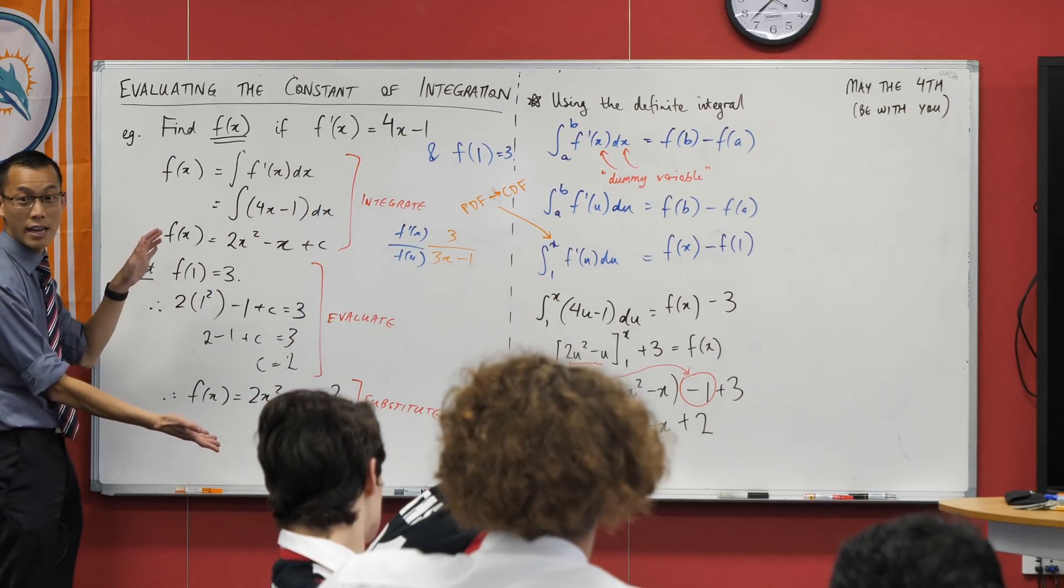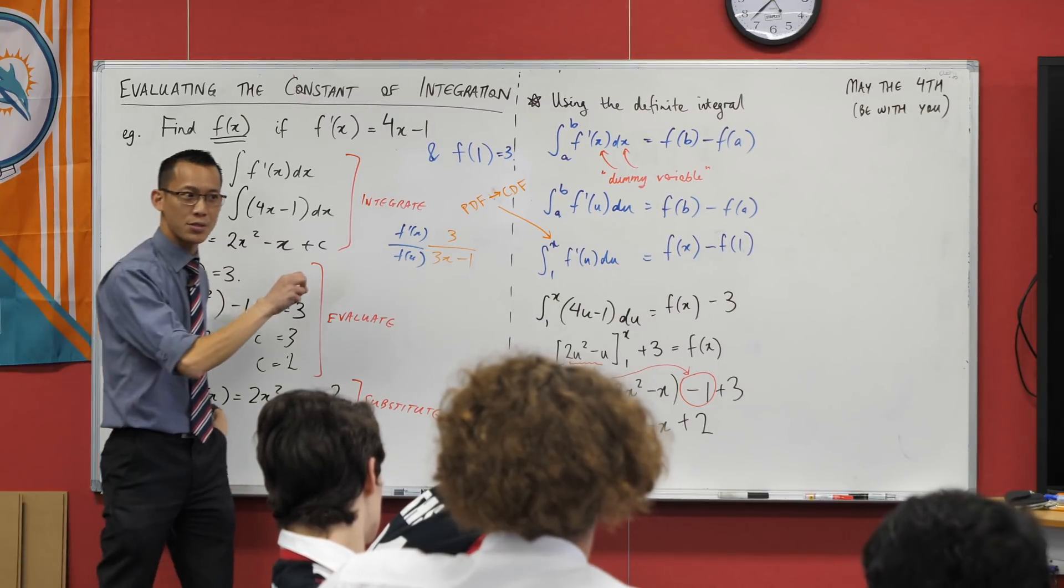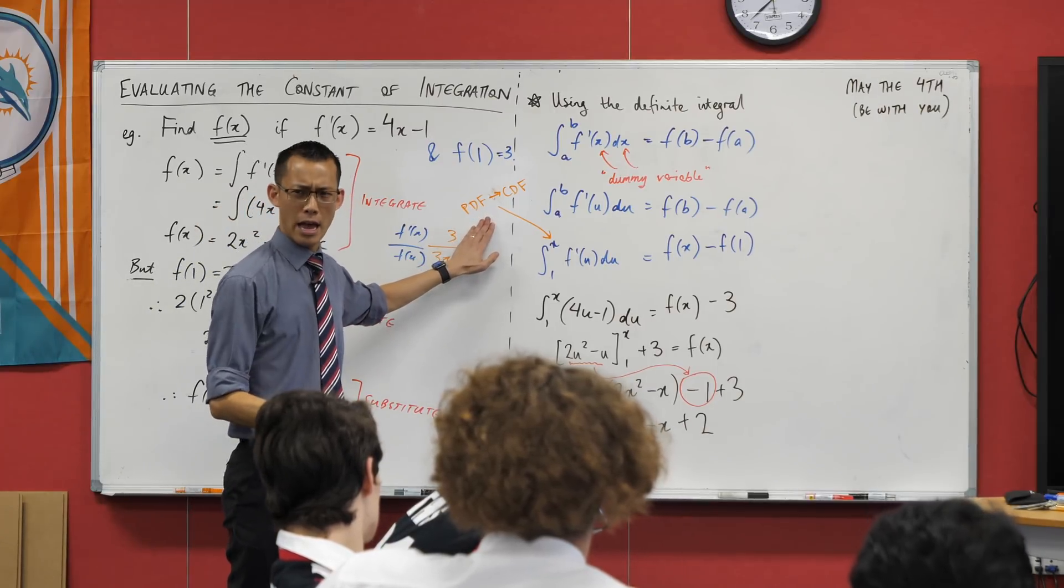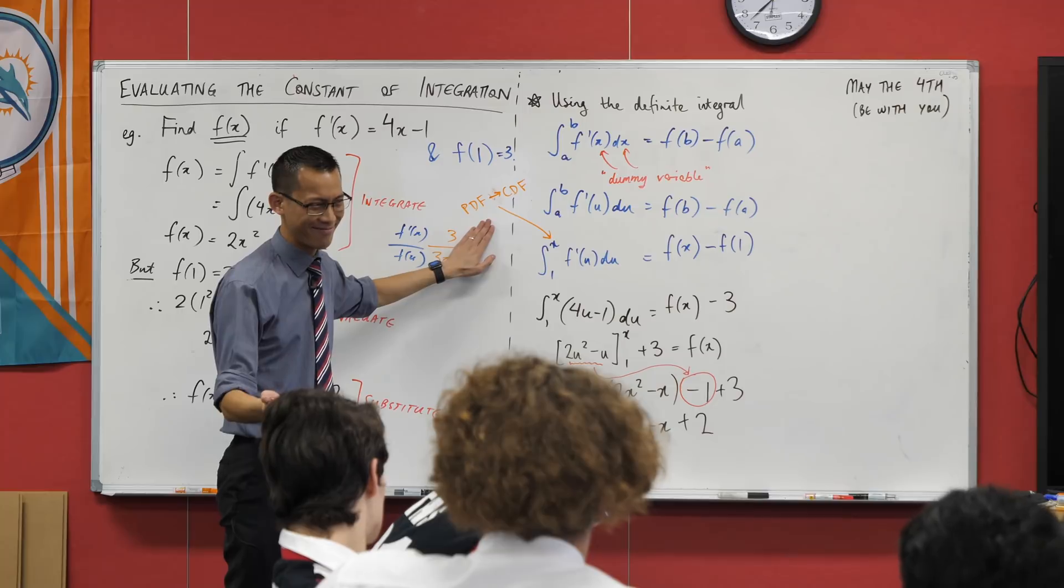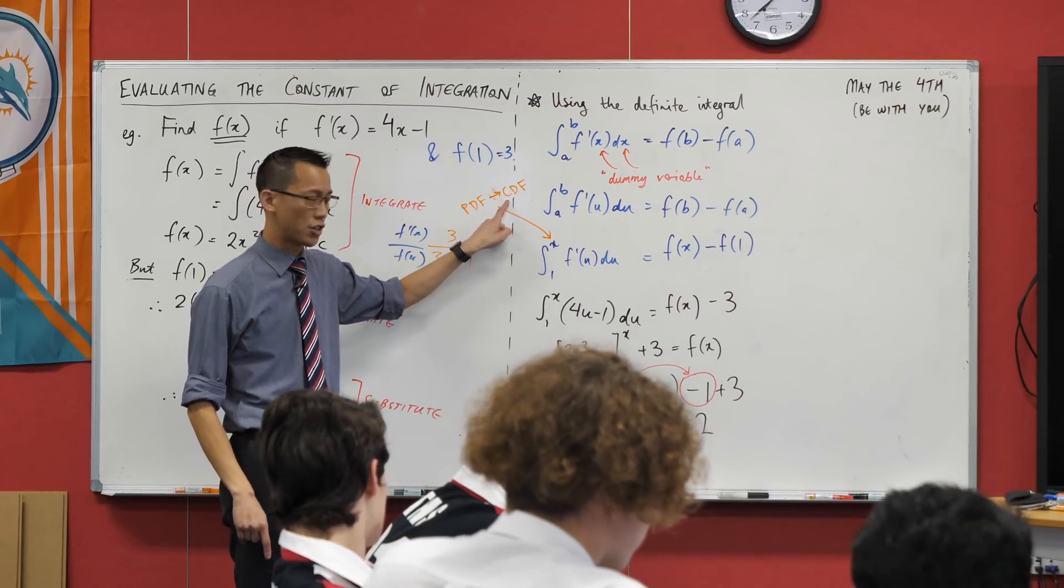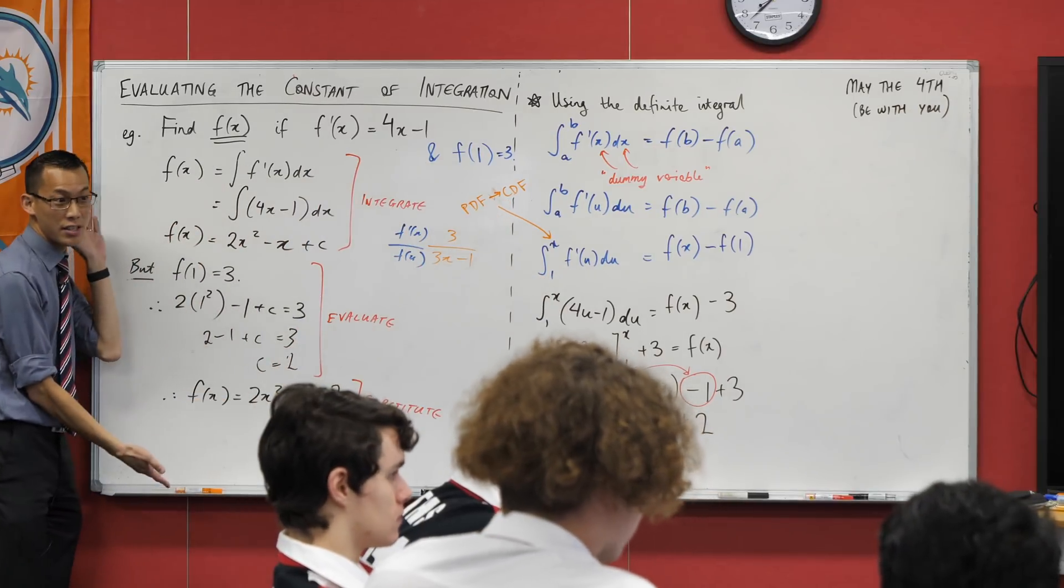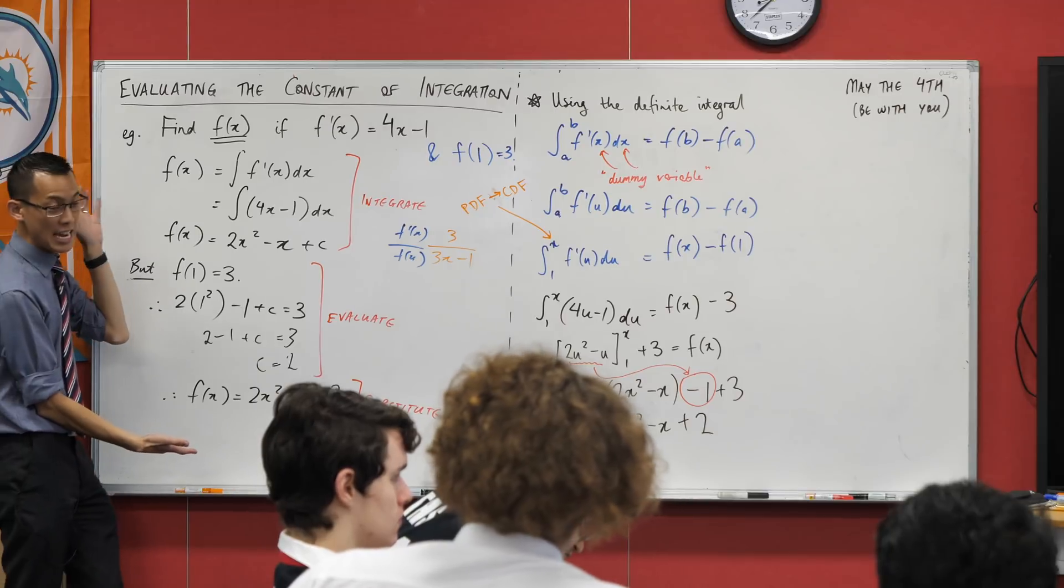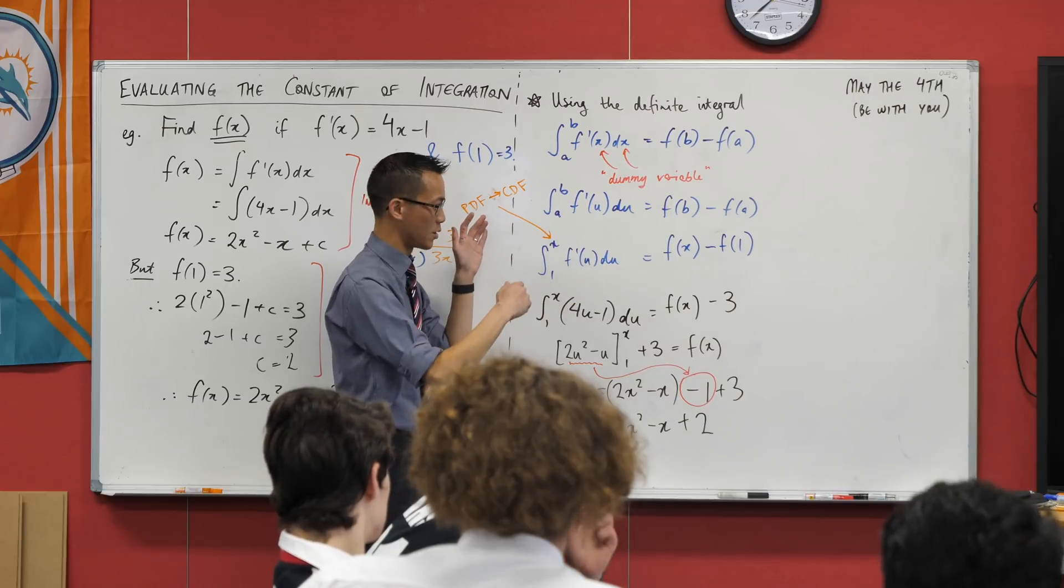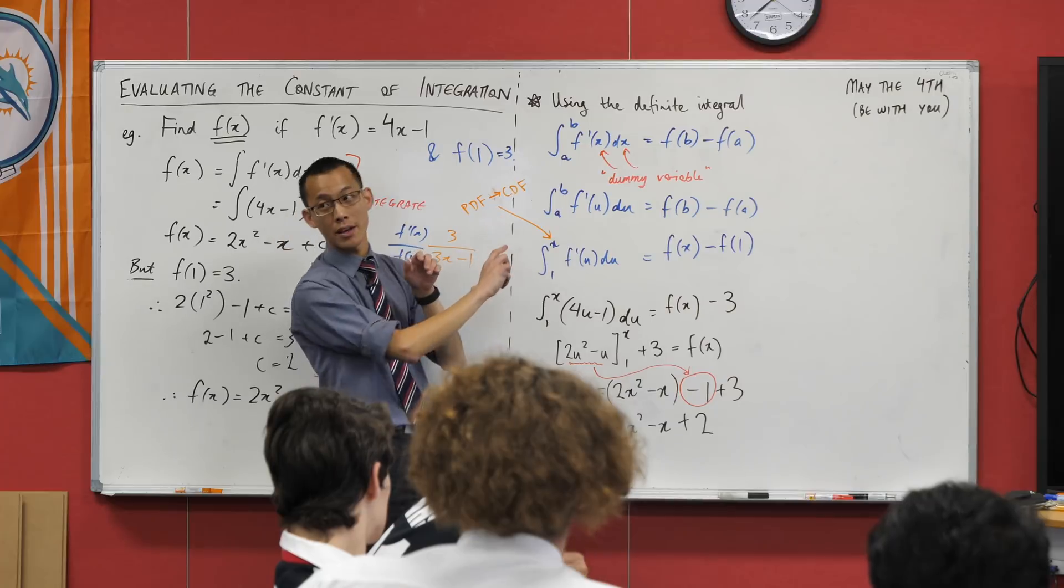And secondly, you will get to continuous random variables and you will learn about an object called a probability density function that you're going to need to turn into a cumulative distribution function. And this trick right here, the one that I said was unnecessary for this question, is kind of a bonus. It no longer becomes a bonus. You have to wrestle with this. And I've seen many years of students get really confused. This is a relatively new part of the course, this thing here. And this is the move that you're going to pull.